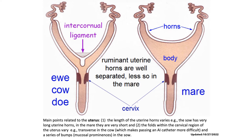Comparing the uterus of the ewe, cow, doe, ruminants, and mare: all have two uterine horns, one uterine body, and one cervix — all are bicornuate. The mare's uterus is also bicornuate, previously called bipartite. The intercornual ligament is present in the cow and doe. The ruminant uterine horns are well separated compared to those of the mare.